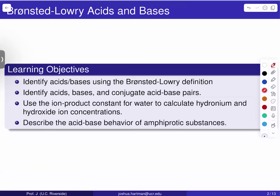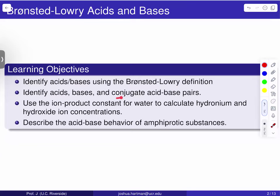Our unit learning objectives for this first lecture are getting some essential definitions down pat. We're going to find that the definitions you may be familiar with previously regarding acid-base chemistry don't quite cover the full spectrum of topics we want to properly discuss. So we're going to expand our definition of acids and bases using the Bronsted-Lowry definition, and we're going to use this to identify acids, bases, and conjugate acid-base pairs.